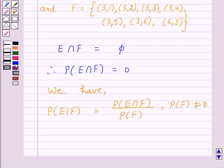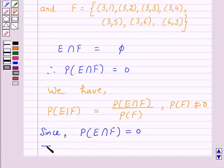Since P(E∩F) = 0, this implies P(E|F) = 0.